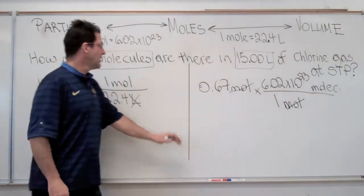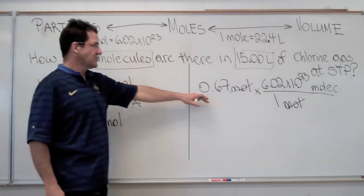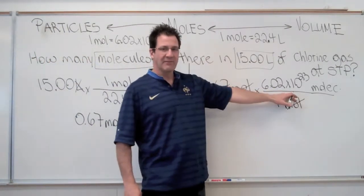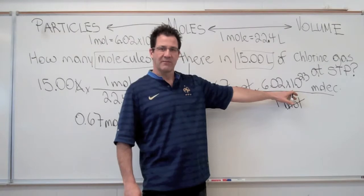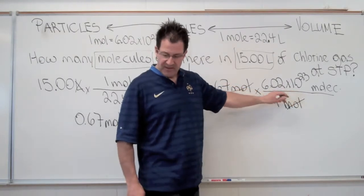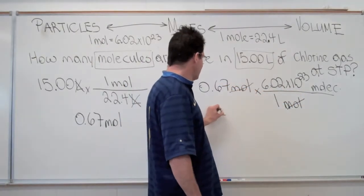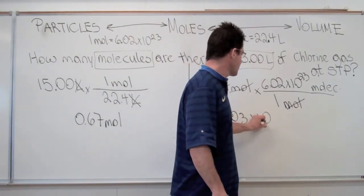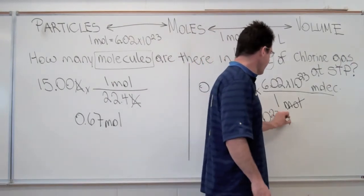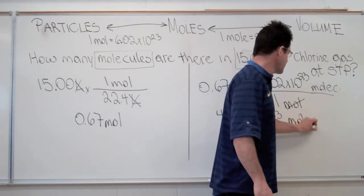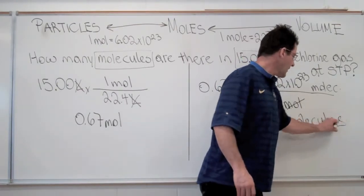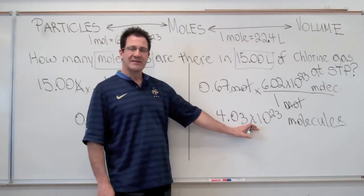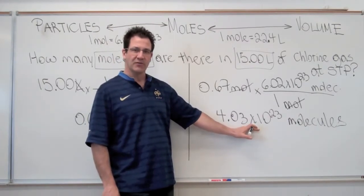That's what we want to know: how many molecules are there? So it's 0.67 times Avogadro's constant, 6.02 times 10 to the 23rd. And you can see that we come up with our answer, therefore, 4.03 times 10 to the 23rd molecules.